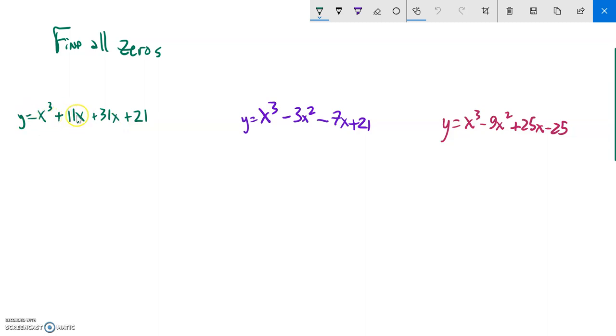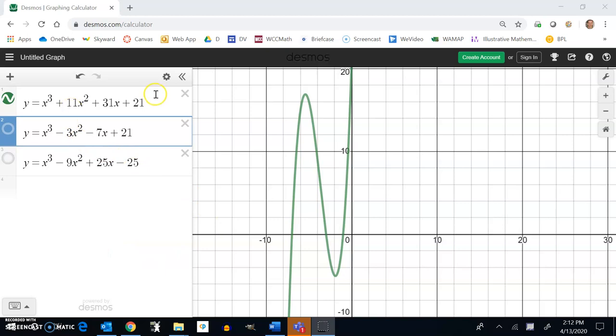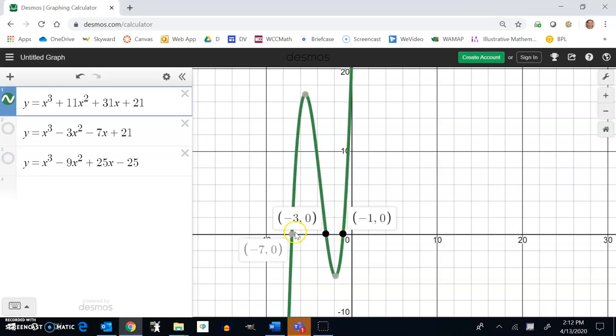First thing I'm going to do is graph that, so I don't have to do any guessing and checking. And look, it's already graphed. Right here I can see the three zeros on this graph. There's one here, one here, and one here: negative seven, negative three, and negative one.